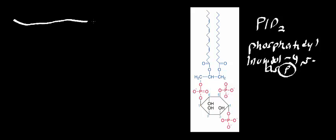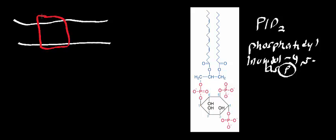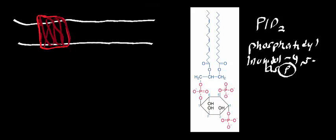Let's look at the mechanism. Here's some receptor — we used the adrenergic receptor in the last one, but really it can be any hormone receptor. So it's going to be a hormone that binds to the receptor, and instead of the G protein binding to adenylate cyclase, the G protein is going to dissociate and activate a different enzyme.